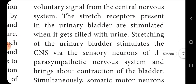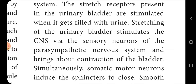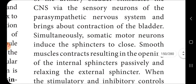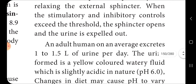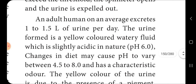Stretch receptors present in the urinary bladder are stimulated when it fills with urine. Stretching of the urinary bladder stimulates the CNS via sensory neurons and the parasympathetic nervous system, bringing about contraction of the bladder. Somatic neuromotor neurons also induce the sphincter to close initially. Smooth muscles contract, resulting in the opening of the internal sphincter passively and relaxing of the external sphincter. When the voluntary inhibitory control also exceeds the threshold, the sphincter opens and urine is expelled out.